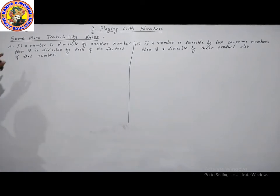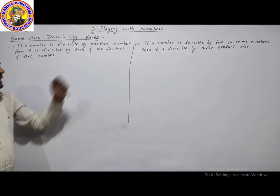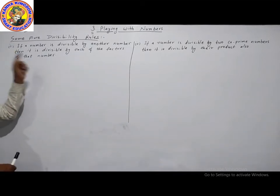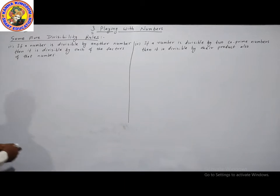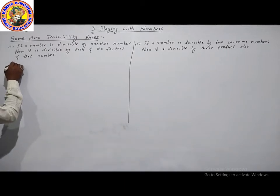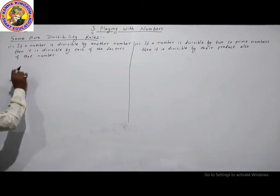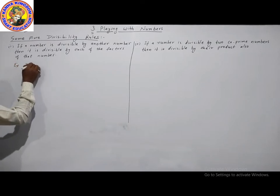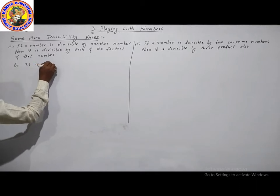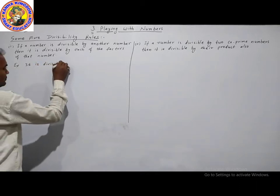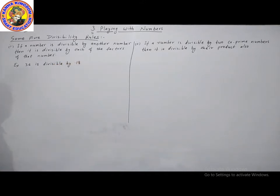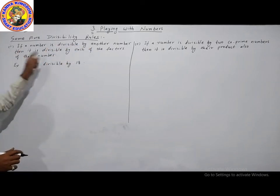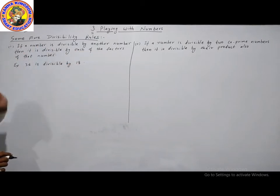The first rule is: if a number is divisible by another number, then it is divisible by each of the factors of that number. To test this rule with an example: 36 is divisible by 18.